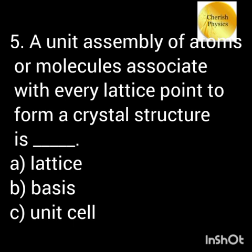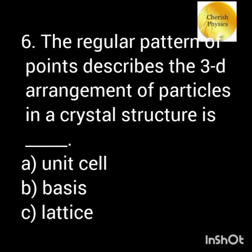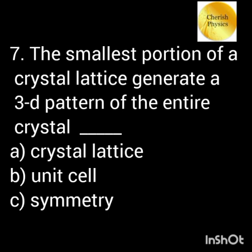A unit assembly of atoms or molecules associated with every lattice point to form a crystal structure is called the basis. The regular pattern of points describing the 3D arrangement of particles in a crystal structure is the space lattice. The smallest portion of a crystal lattice that generates a 3D pattern of the entire crystal is the unit cell.